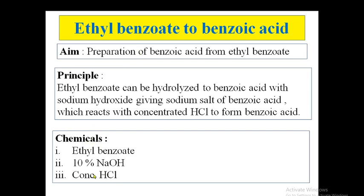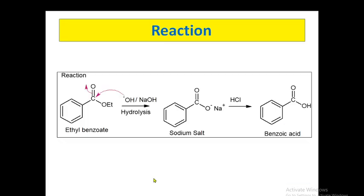The sodium salt of benzoic acid then reacts with concentrated HCl to form benzoic acid. The chemicals required for this conversion are ethyl benzoate, 10 percent NaOH, and concentrated HCl. Looking at the reaction: ethyl benzoate in basic medium undergoes hydrolysis — the hydroxide ion attacks the carbonyl carbon. The O⁻ will open and revert back, and since the medium is basic, sodium benzoate is formed. This sodium benzoate on further acidification gives the desired product, benzoic acid.